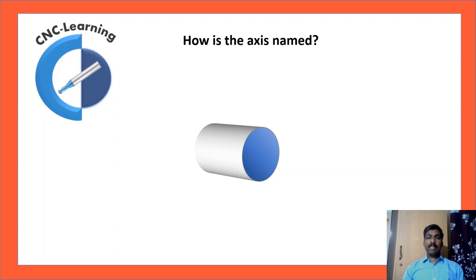How is the axis named? Always spindle axis will be Z axis. And in case of a turning center, diameter axis will be X axis.